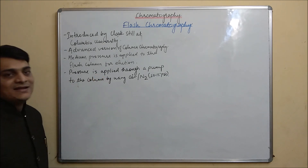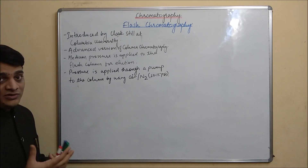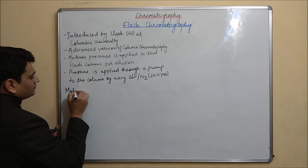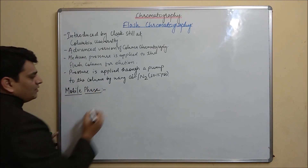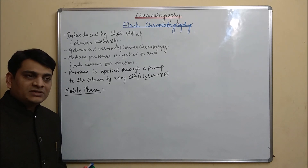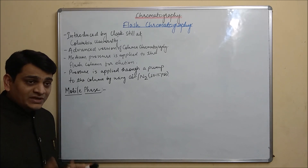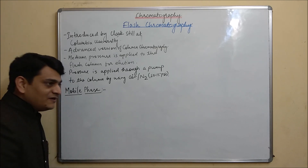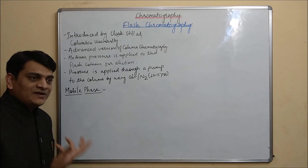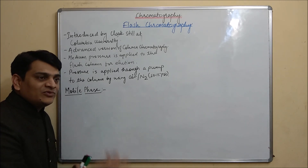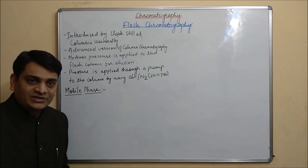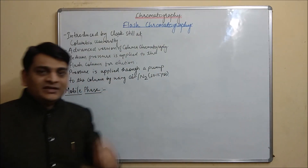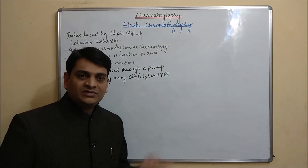Now, coming to the solvent system or mobile phase of flash chromatography. For mobile phase development, the same method is applied just like TLC. First we will use TLC for development of the mobile phase, and after development of the mobile phase in TLC, we will use that mobile phase in flash chromatography for separation. The list of solvents is given in the linked video, so you can watch the solvent system from that video.